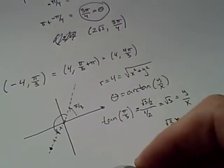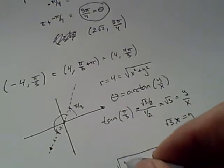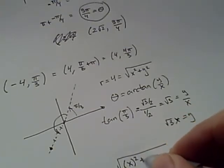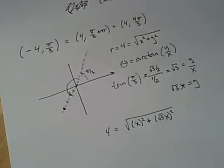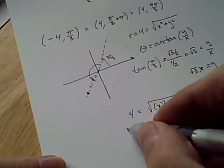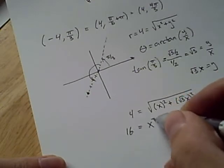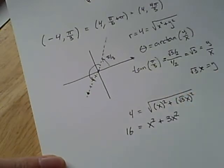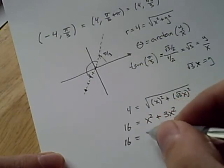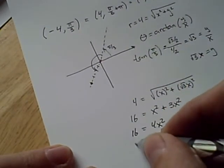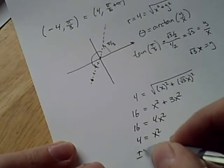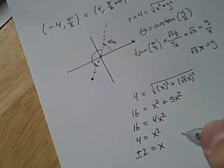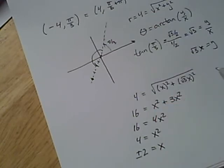So we'll have 4 equals the square root of x squared plus root 3 x squared. We can square both sides, get 16 equals x squared plus 3 x squared. That's 16 equals 4 x squared. 4 equals x squared. Then we have plus or minus 2 equals x. So again, the picture helps. We have to make a decision. Which one is it? Well, it's minus 2.